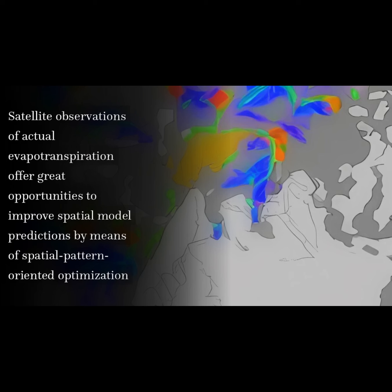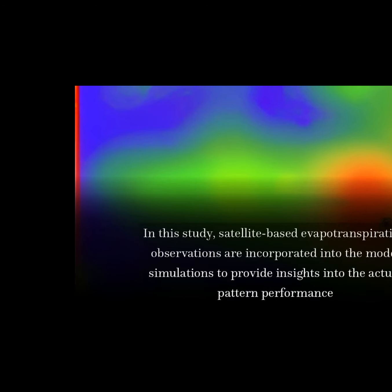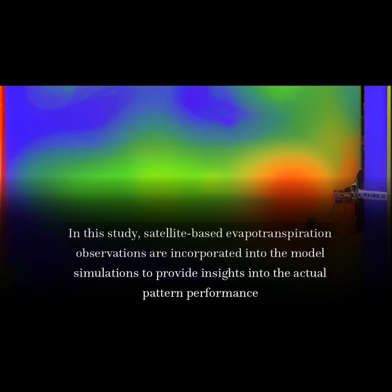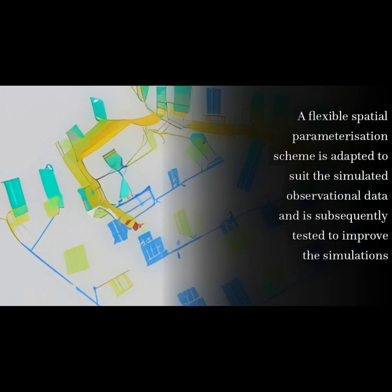Satellite observations of actual evapotranspiration offer great opportunities to improve spatial model predictions by means of spatial pattern-oriented optimization. In this study, satellite-based evapotranspiration observations are incorporated into the model simulations to provide insights into the actual pattern performance. A flexible spatial parameterization scheme is adapted to suit the simulated observational data and is subsequently tested to improve the simulations.